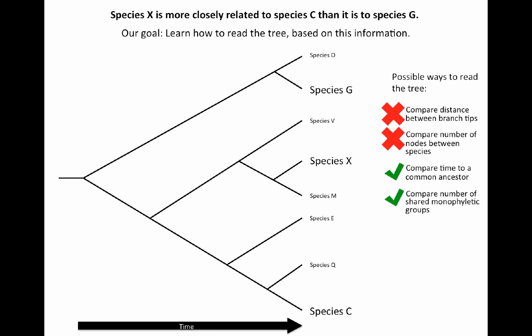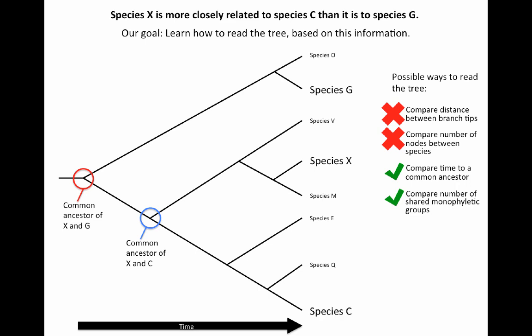Today we learned two incorrect ways to read an evolutionary tree: comparing the distance between branch tips and comparing the number of nodes between species — both led to incorrect results. We also learned two correct ways: comparing the time to a common ancestor, and comparing the number of shared monophyletic groups. The more recently two groups share a common ancestor, the more monophyletic groups they will share. This is similar to saying I'm more related to my cousin with whom I share grandparents than to my second cousin with whom I only share great-grandparents.